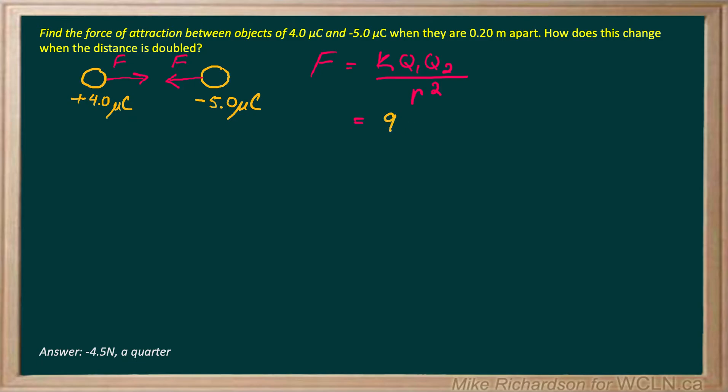So K, 9 times 10 to the 9 Newton meters squared over coulomb squared. That's straight off your formula sheet.